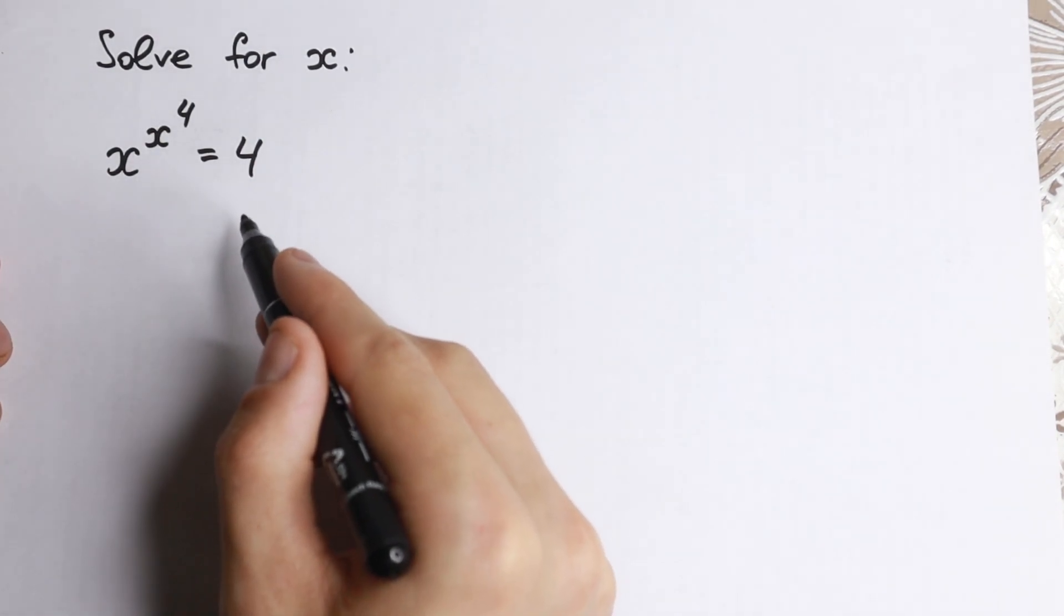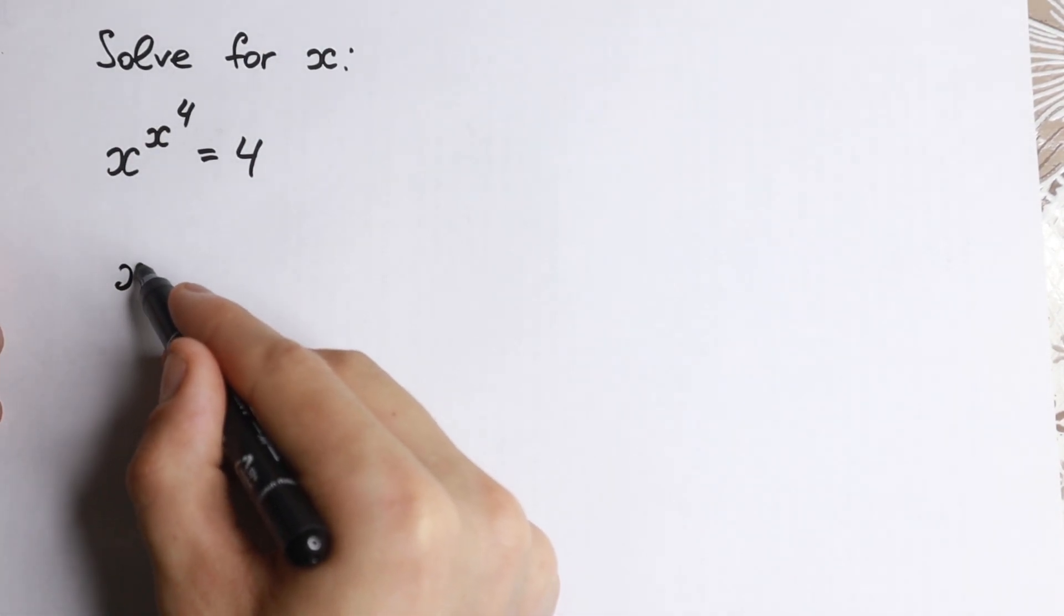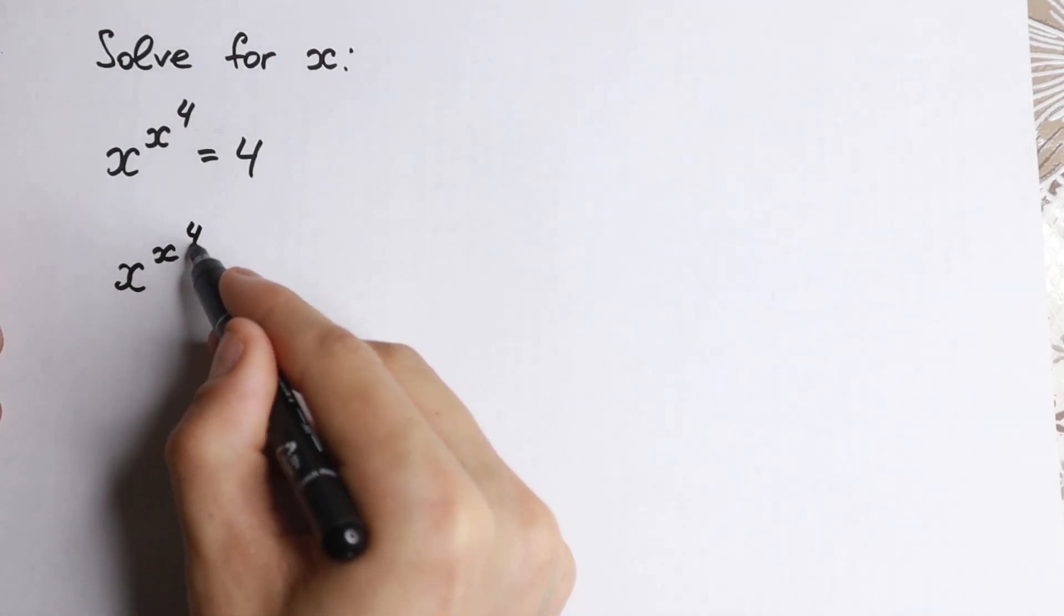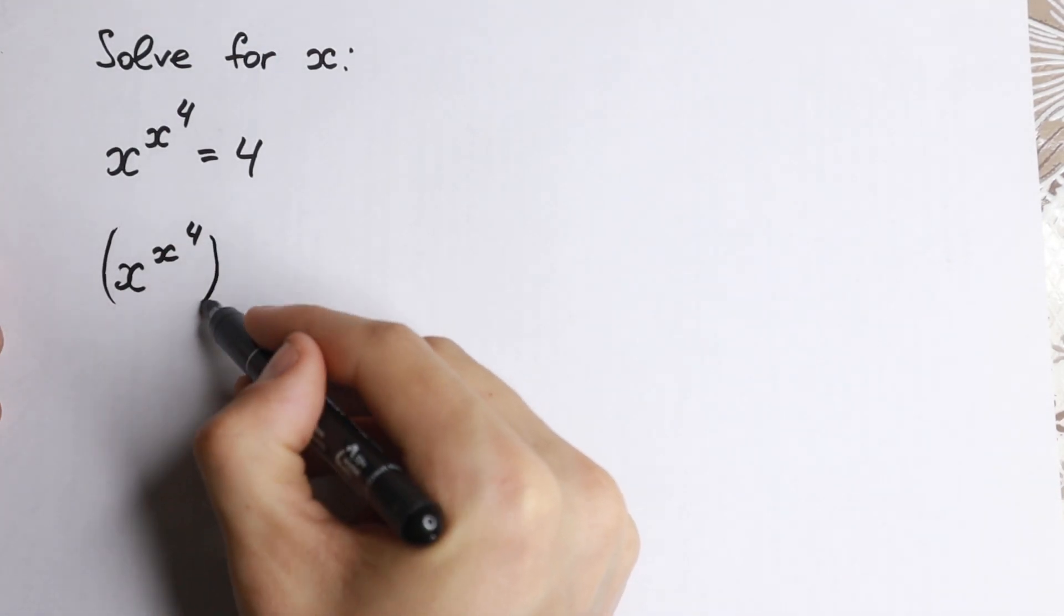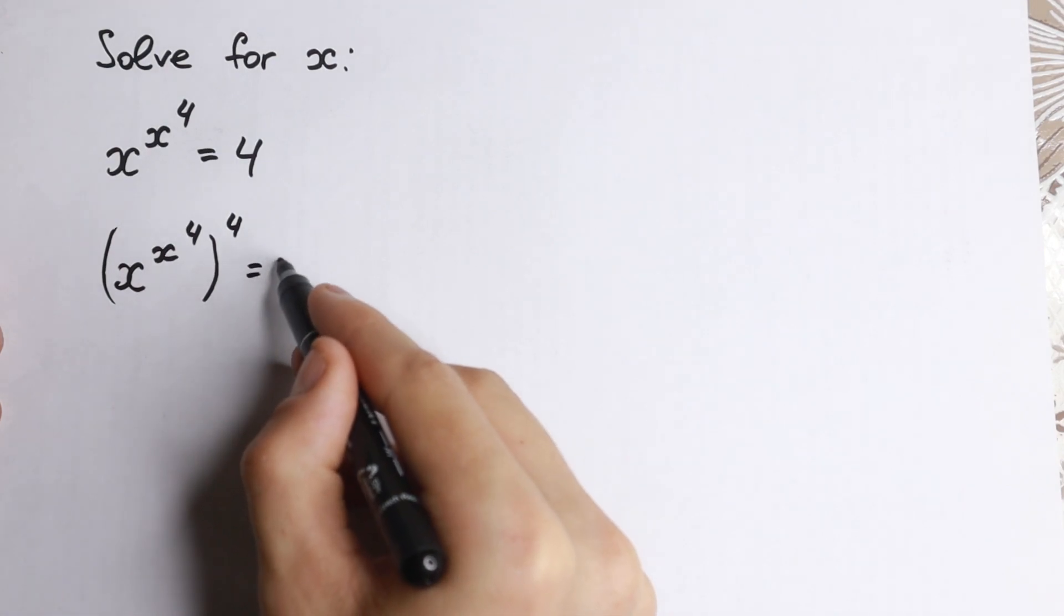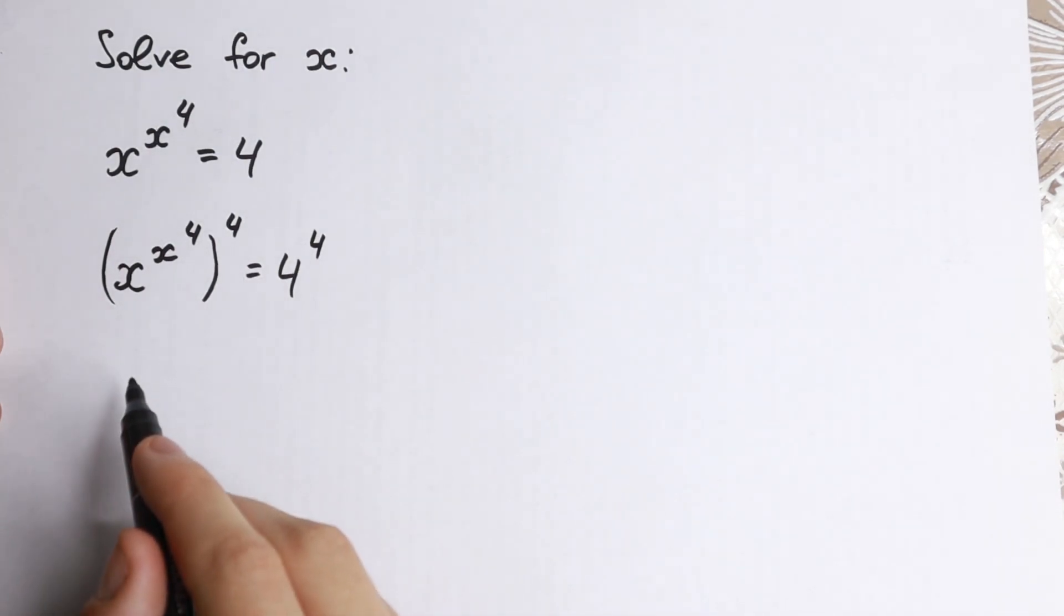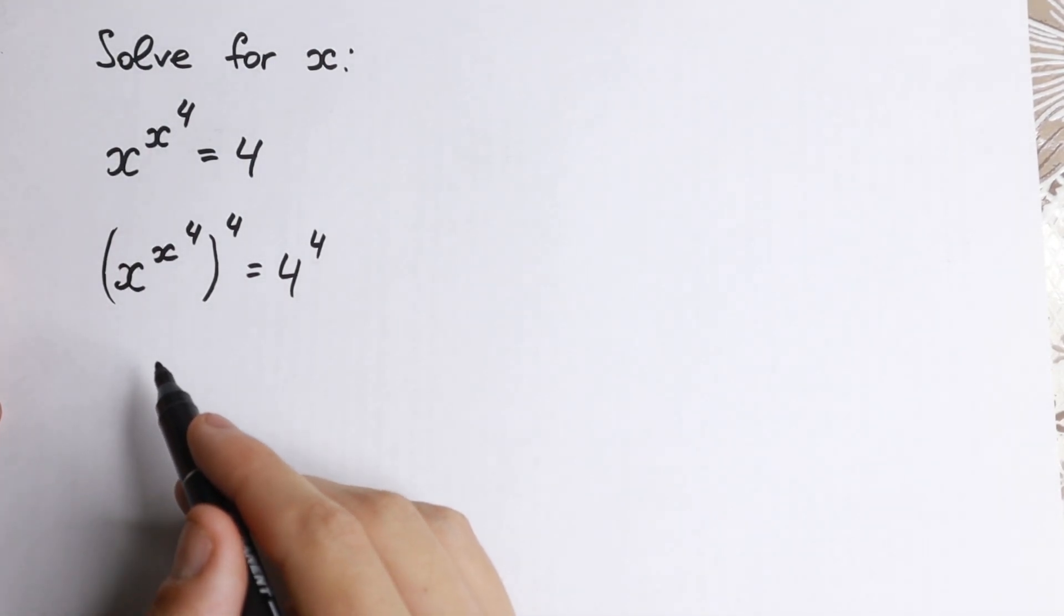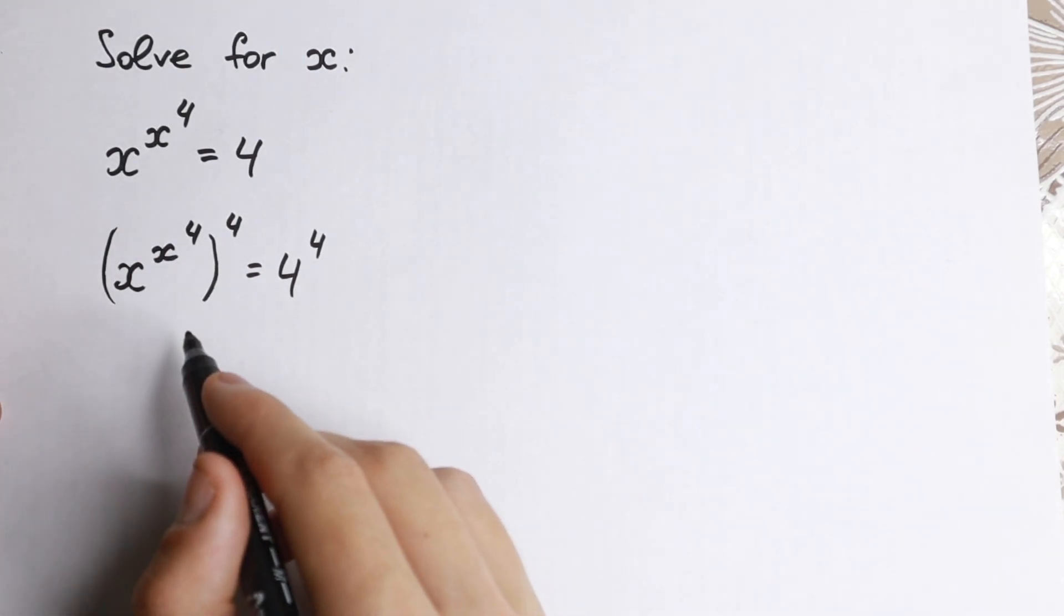First of all, let's raise both sides to the fourth power. So we will have (x to the x to the fourth) to the fourth power equal to four to the fourth power. I just raised both sides to the fourth power, nothing changed for us, but I wanted to do this.